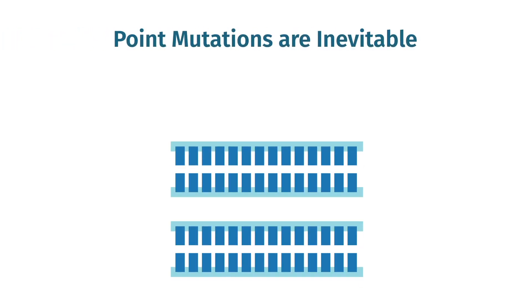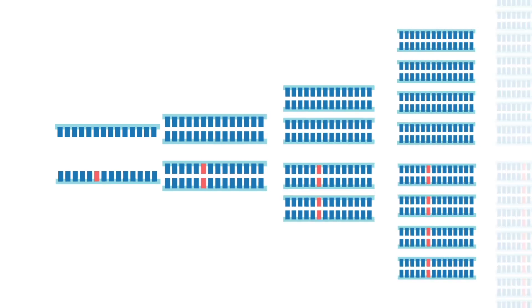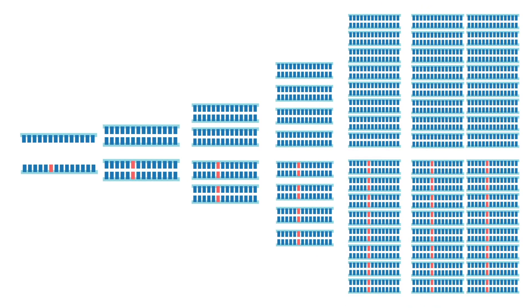Point mutations are inevitable during any PCR, and errors are cumulative. A mutation created in an early round of amplification will appear in progressive daughter strands. As a result, fidelity is the biochemical property of most concern when choosing your enzyme.